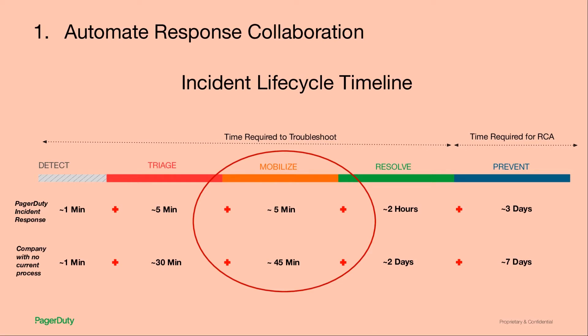Getting all the people you need and none of the people that you don't leads to the next way you can utilize automation around reducing operational load: automating stakeholder communications.